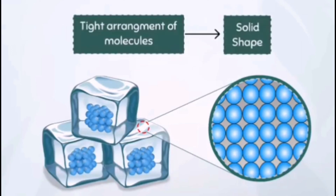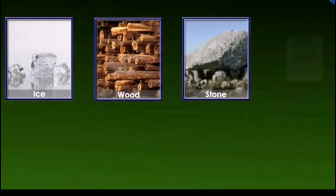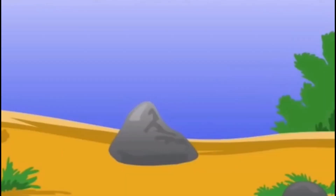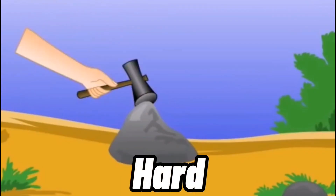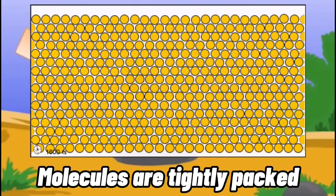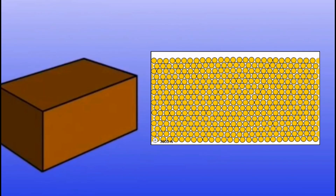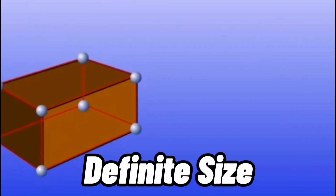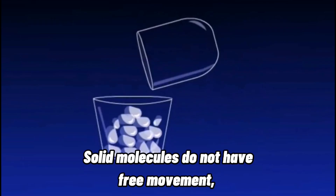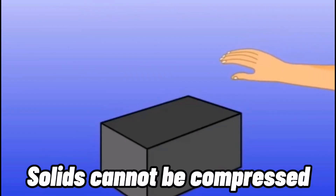Thus, the tight arrangement of molecules in a solid substance gives it its definite shape. Ice, wood, stone, chair, table, wall, and brick are examples of solids. Solids are hard, strong, and rigid materials. Because of the strong intermolecular forces, solids have definite size, shape, and volume. Since the molecules in solids do not have free movement, they cannot flow. Solids cannot be compressed appreciably.